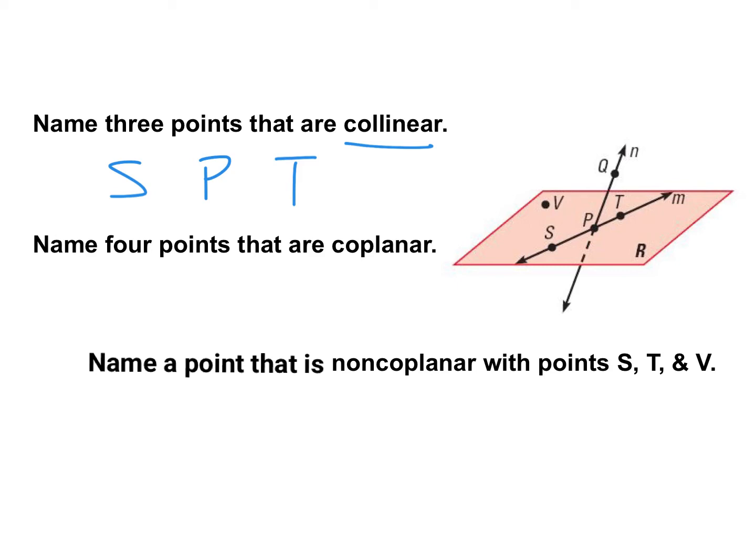In the next scenario, we have name four points that are coplanar. Coplanar meaning they're on the same plane. So they have to share the same flat surface for them to be coplanar. And in that scenario, we have V, S, P, and T. Those are my four points.